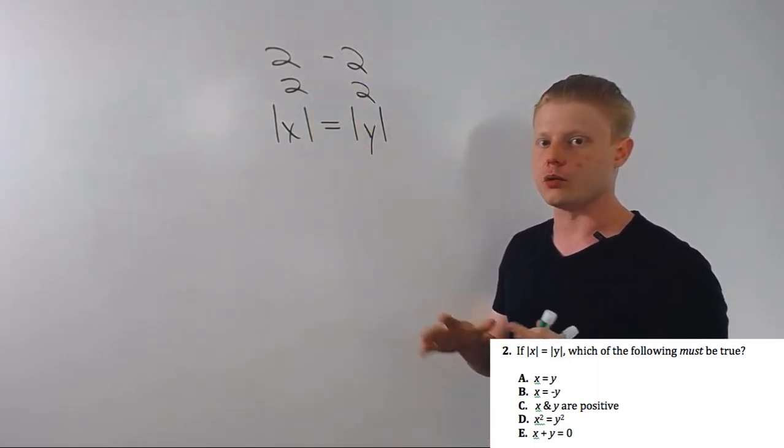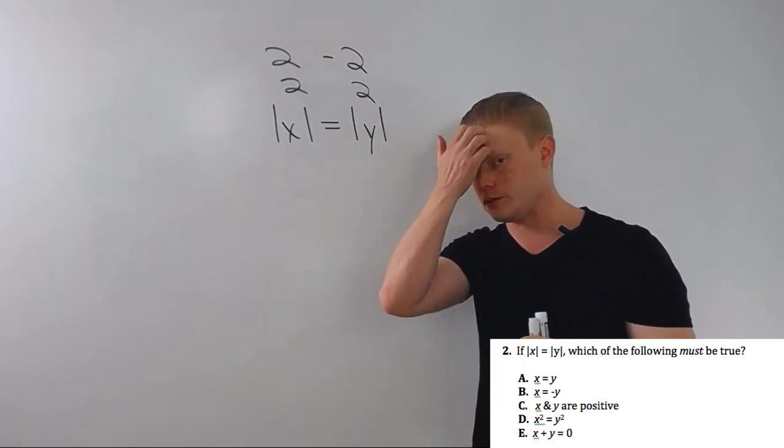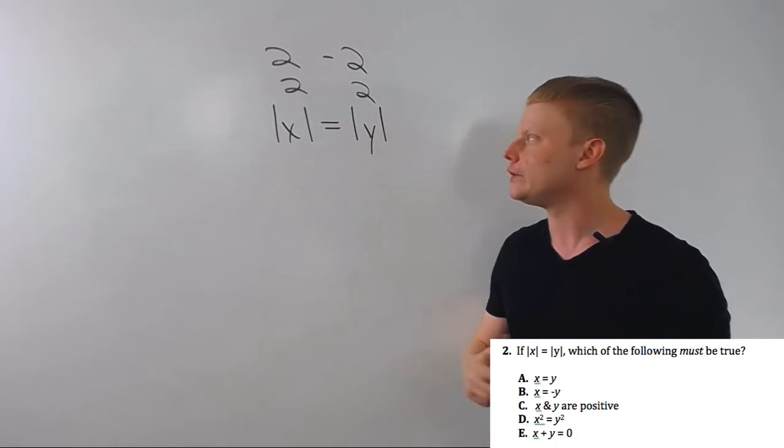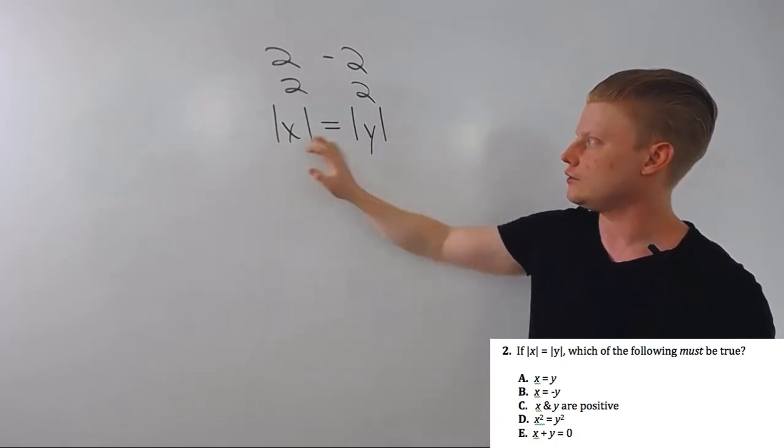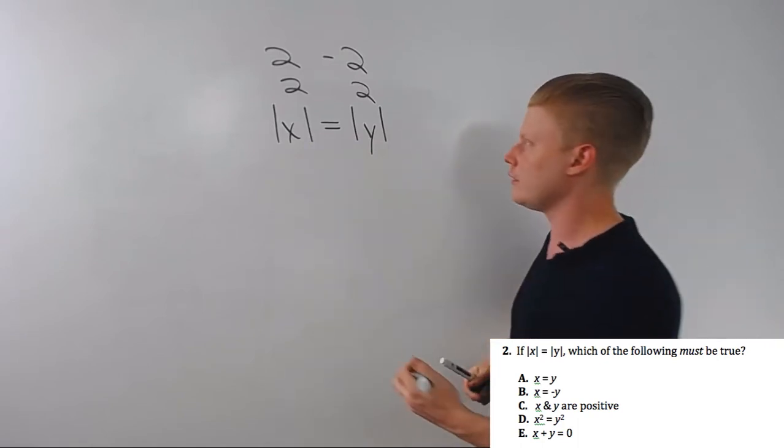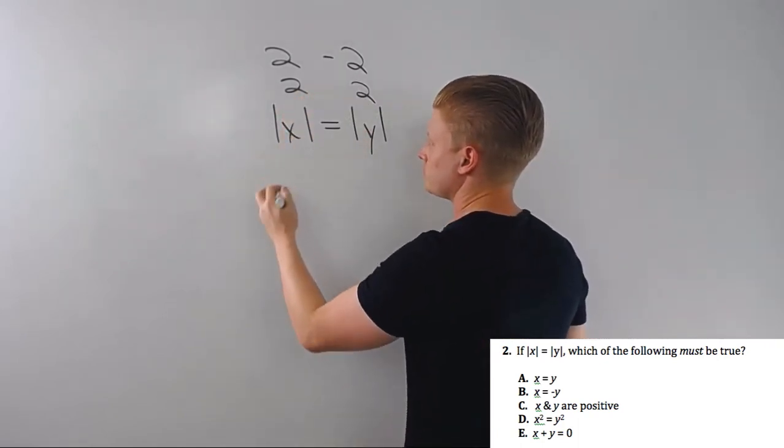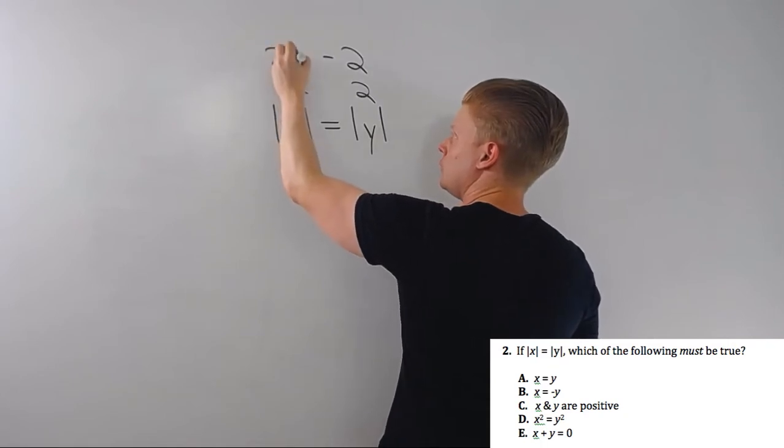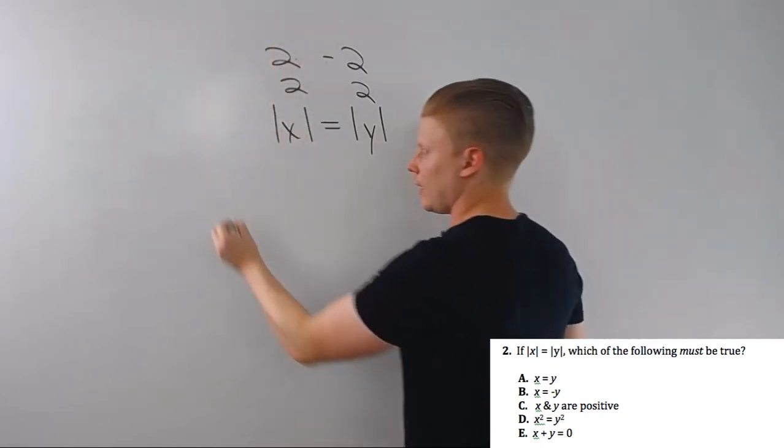We can say that x is two and y is negative two. And we should pick a different set where they're the same sign and see how that works. We could say x is two and y is two. There's no rule that says they can't be the same number. That's a really tricky concept. You'll see that on the GMAT a lot. So x and y same absolute value, so x is equal to y? Sure that can be true, right?